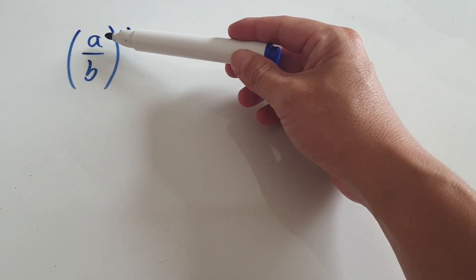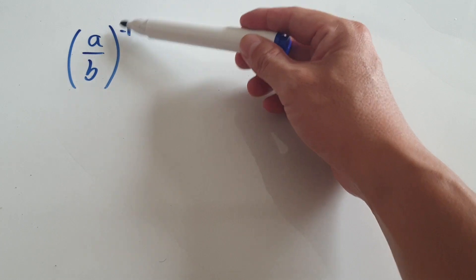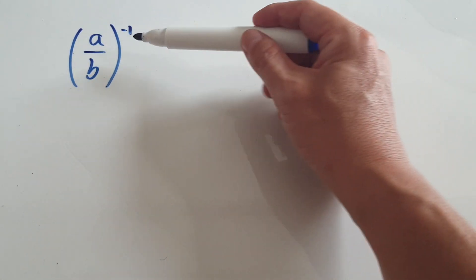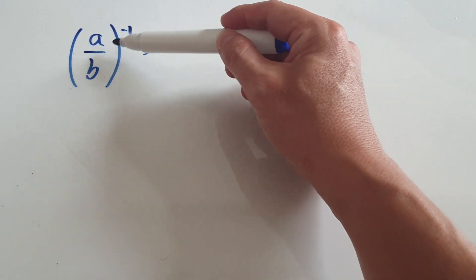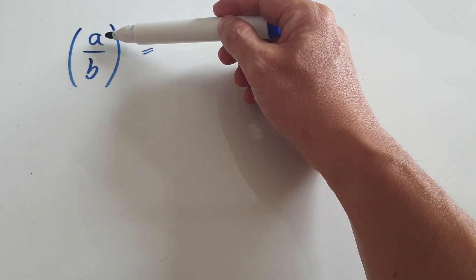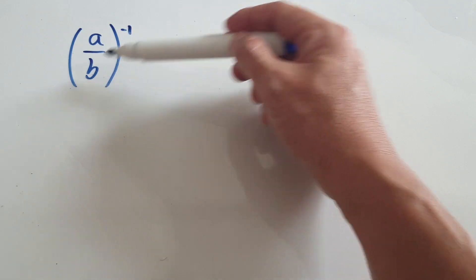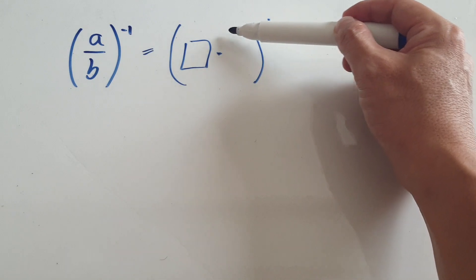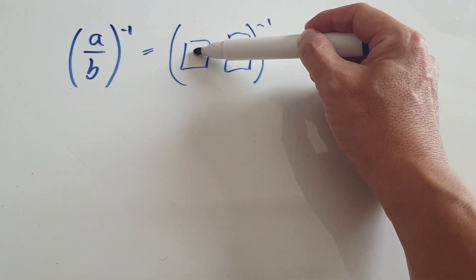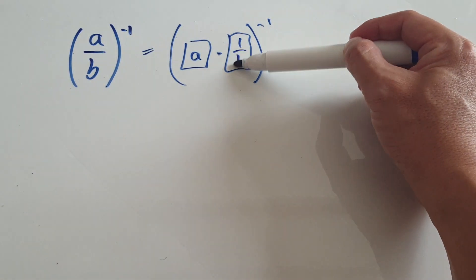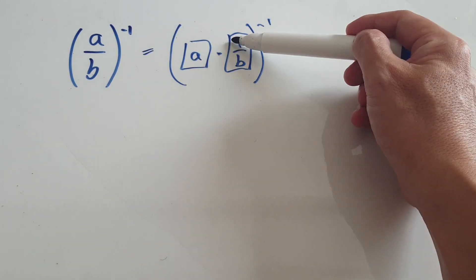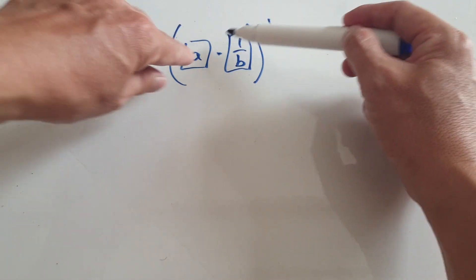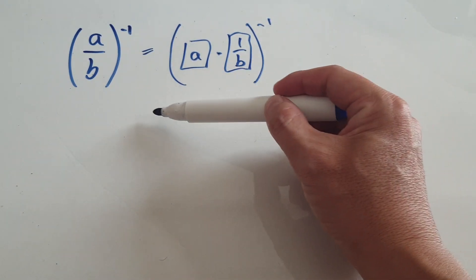Let's try to understand what it means to have (a over b) to the power of negative one, because we don't really understand what it means to have a power of a negative. One way is to get everything onto one layer — you've got two layers here. Imagine this as being one block times another block: a times one over b, because if you multiply that out you get a over b. So when you get a fraction like this, drag the a out so it looks like a times (1/b).